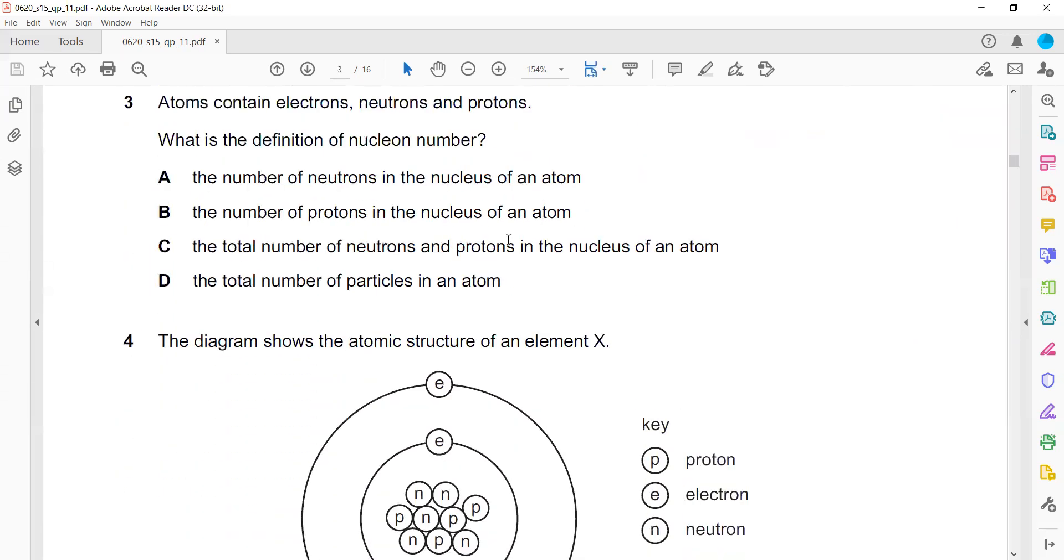An atom contains electrons, neutrons, and protons. What is the definition of nucleon number? The nucleon number is the sum of neutron and proton inside the nucleus. That's why C is the right answer.